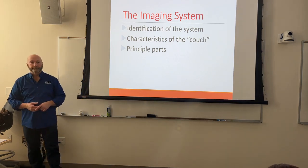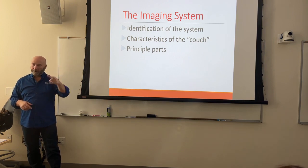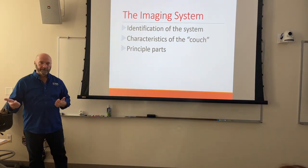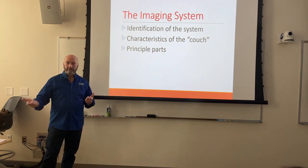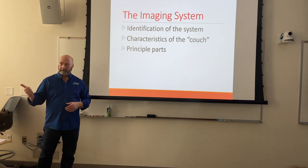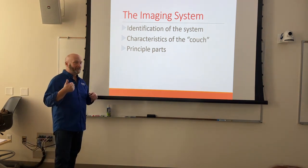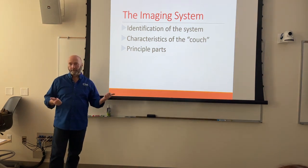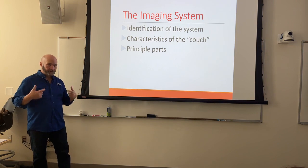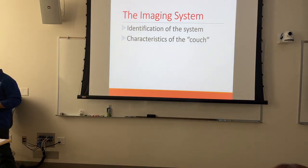The principal parts of the imaging system are three: the operating console, where you control everything — KVP, mA, photocells, which Bucky you're using, focal spot size; the X-ray tube, which is in the room creating X-rays; and the high voltage circuitry, also called the high voltage transformer, which creates the high energy needed for X-ray production.